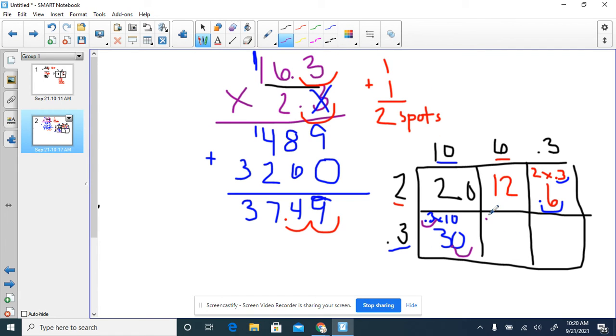Our next question, we're doing 0.3 times 6. Pretend that decimal doesn't exist at first. That gives us 18. Now we're going to bring back in our decimal. We have one spot. We're moving over 1.